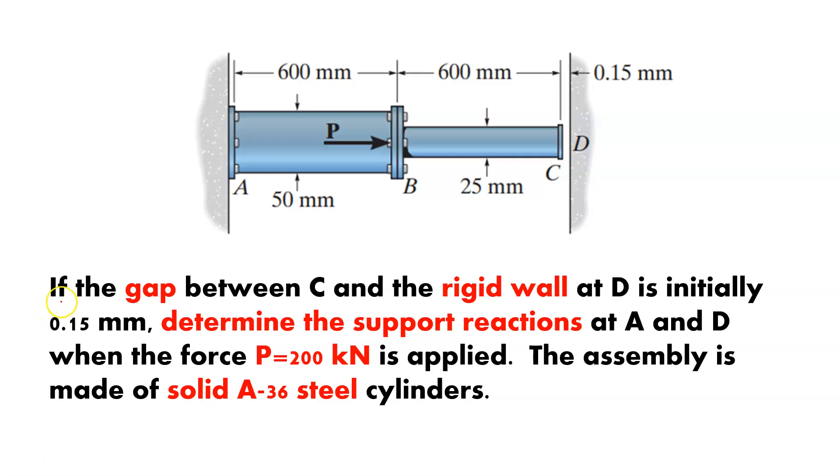So let's read the problem here. If the gap between C and the rigid wall at D is initially 0.15 millimeters, we have C and D, so D is the wall and you have a gap of 0.15 millimeters.